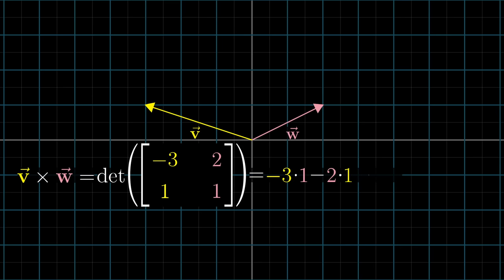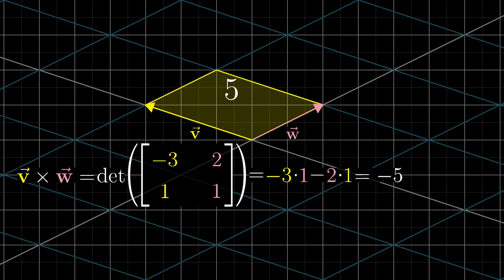So evidently, the area of the parallelogram they define is 5, and since v is on the left of w, it should make sense that this value is negative.